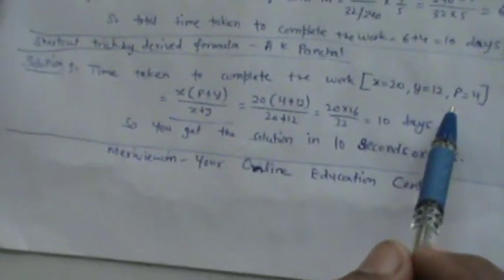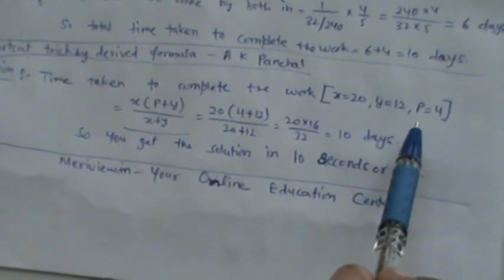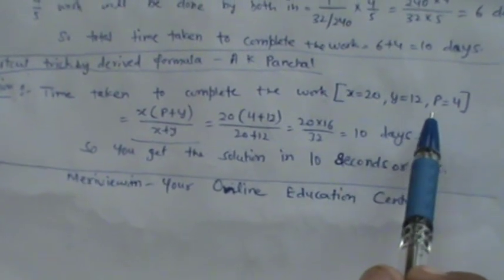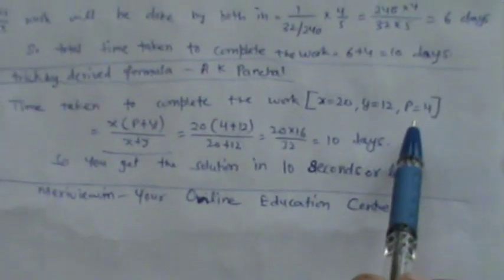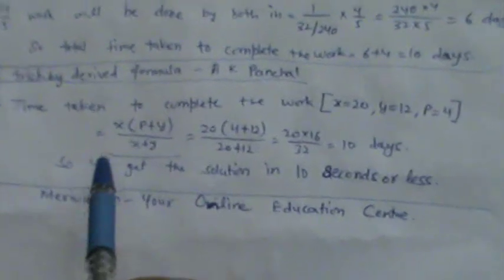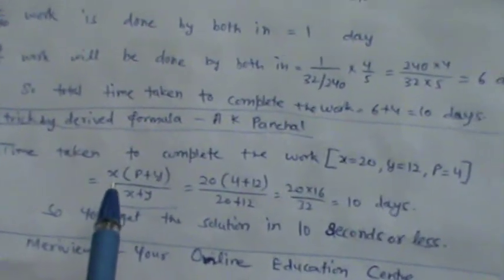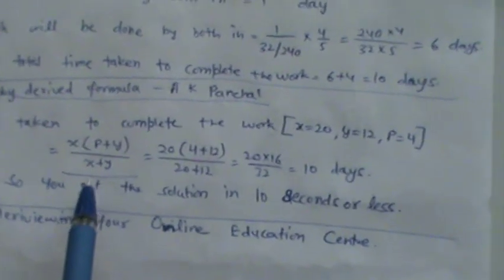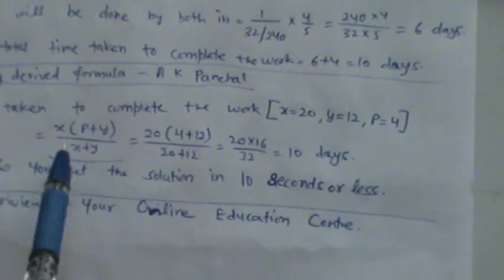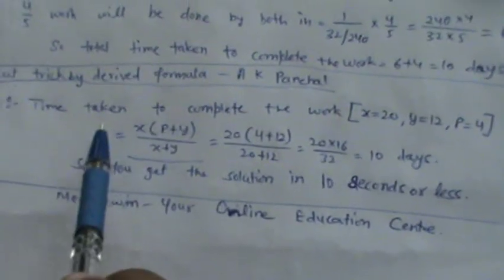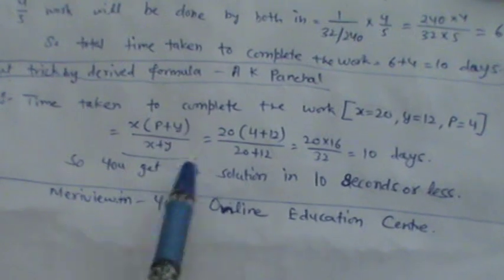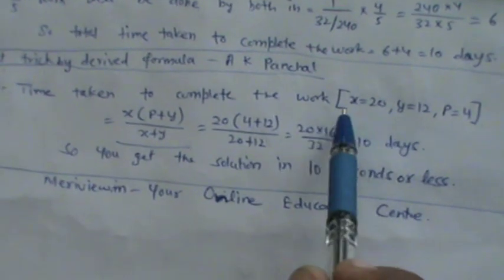So now the formula is x into P plus y over x plus y. Through this formula we can determine the total time taken to complete the work.